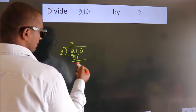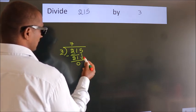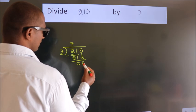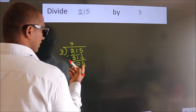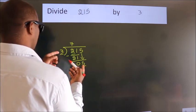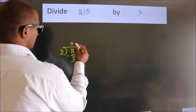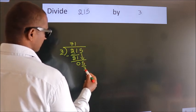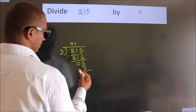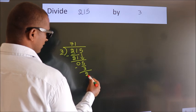After this, bring down the beside number — so 5 comes down, giving us 5. A number close to 5 in the 3 times table is 3 ones, which is 3. Now we subtract. We get 2.